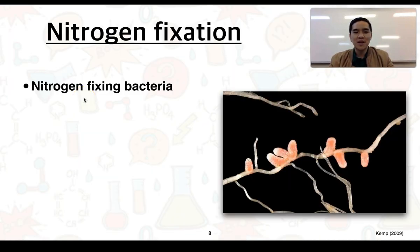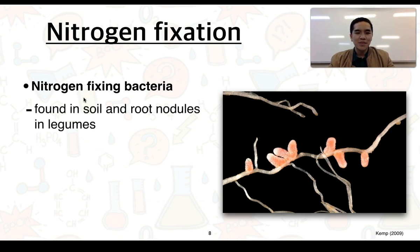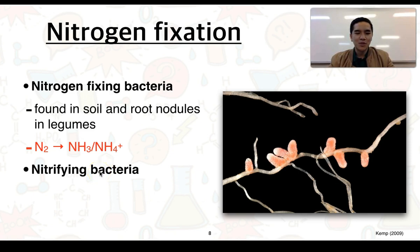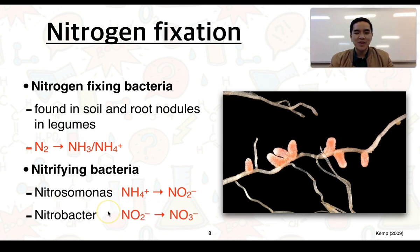Nitrogen-fixing bacteria can be found within the soil or in root nodules found in legumes. They take atmospheric nitrogen and convert it into ammonia and ammonium-based compounds. Following that, nitrifying bacteria take these ammonium-based compounds and firstly convert them into nitrite ions. A second family of nitrifying bacteria then converts these nitrite ions into nitrate ions, which can be absorbed by plants through the roots.